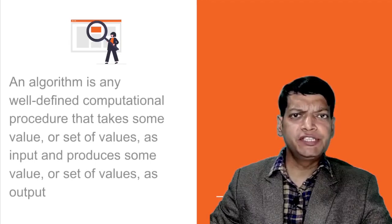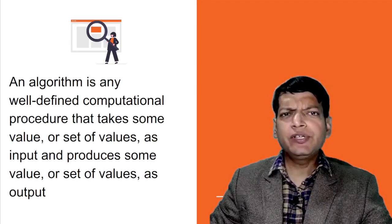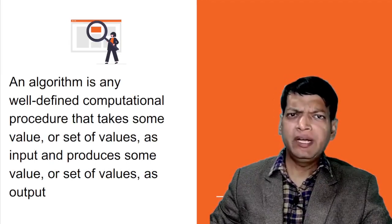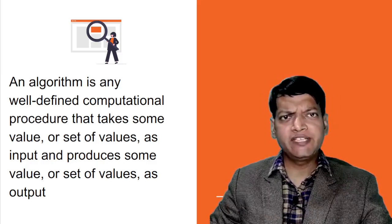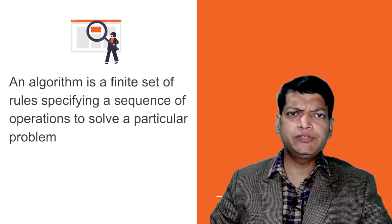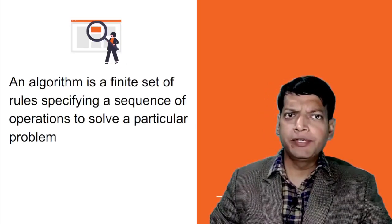Informally, an algorithm is any well-defined computational procedure that takes some values or a set of values as input and produces some value or set of values as output. In other words, an algorithm is a finite set of rules specifying a sequence of operations to solve a particular problem.